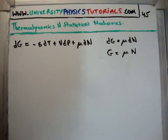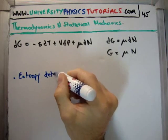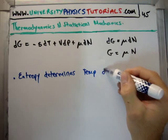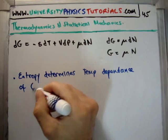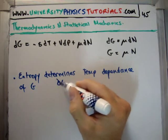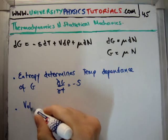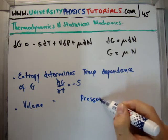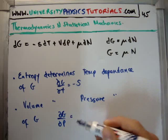So if we look at this particular thermodynamic identity we see that entropy determines the temperature dependence of G because ∂G/∂T equals minus entropy. Similarly we could say volume determines the pressure dependence of G because ∂G/∂P equals volume.